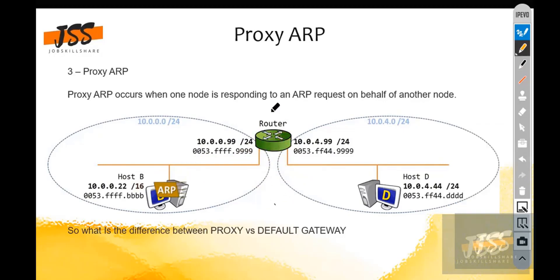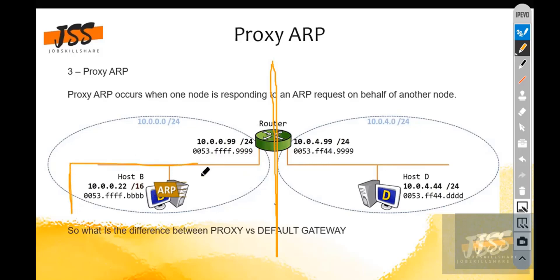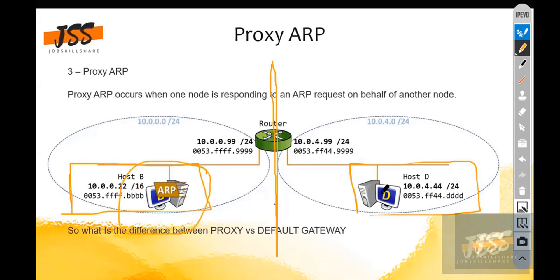Before, we had a switch in traditional ARP. Now this time we have a router, and you know what a router does — it cuts down the broadcast; it will never allow broadcast to travel through. So this is a segregation point. If we have the router in the middle and Host B wants to communicate with Host D but they are on different subnets, on behalf of that computer it is going to communicate. This is known as Proxy ARP.